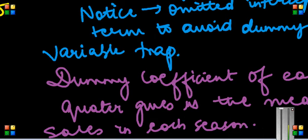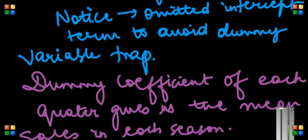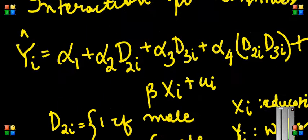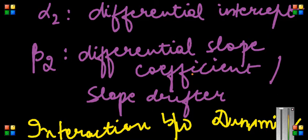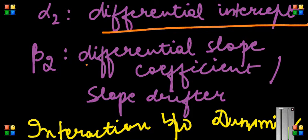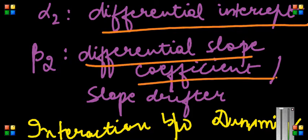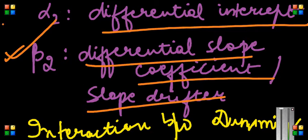So now I have two lines. What do I have to check? I have to check whether this differential intercept and whether this differential slope or slope drifter, the two things are significant or not. All that I have to check is whether β_2 is significant using t-test and is this α_2 significant using t-test.